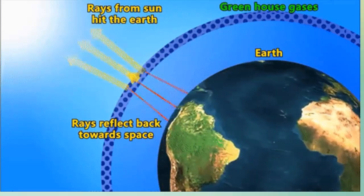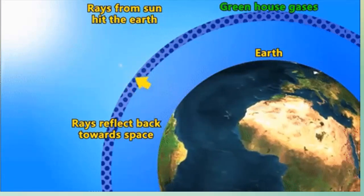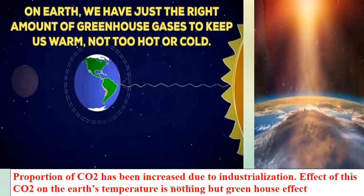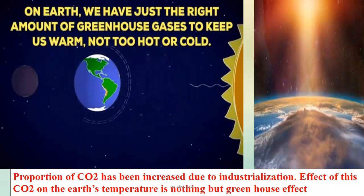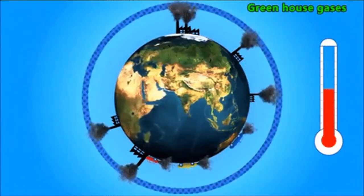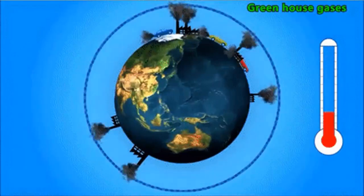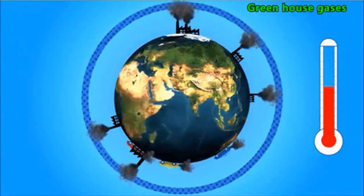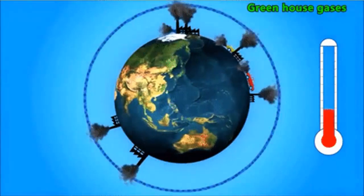As a result, the entire globe remains warm. These gases which contribute to the greenhouse effect are called greenhouse gases — they are good. But now, we have more than the right amount of greenhouse gases. When the proportion of carbon dioxide has increased due to industrialization, the effect on the earth's temperature is also increasing. Because of this, neither do we feel winter as severe, and in summer the temperature is increasing day by day.